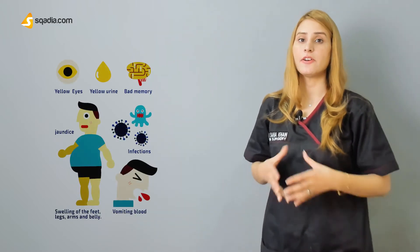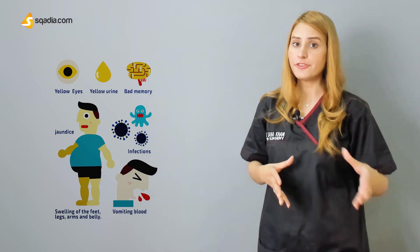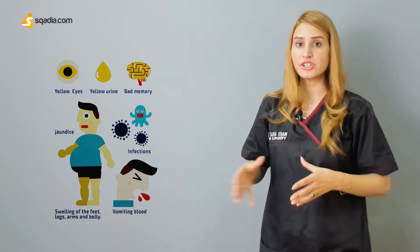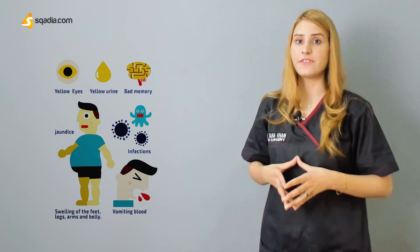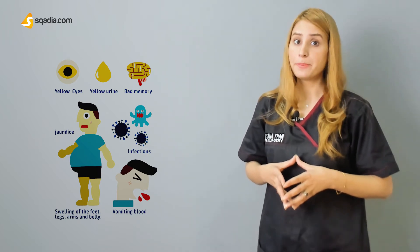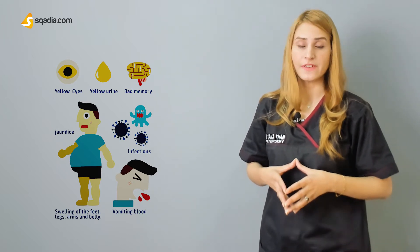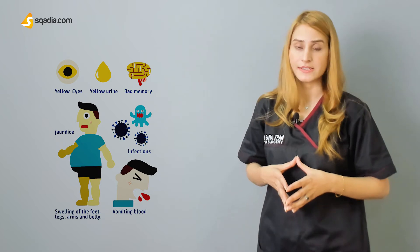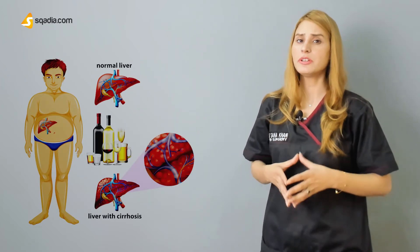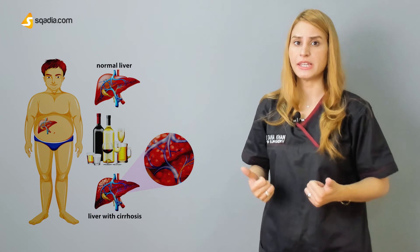As the disease worsens, a person may become tired, weak, and itchy, develop swelling in the lower legs, yellow skin, bruise easily, develop ascites, or develop spider-like blood vessels on the skin.